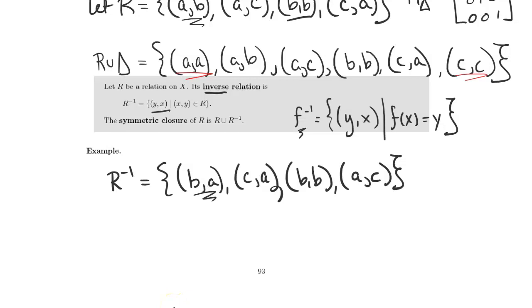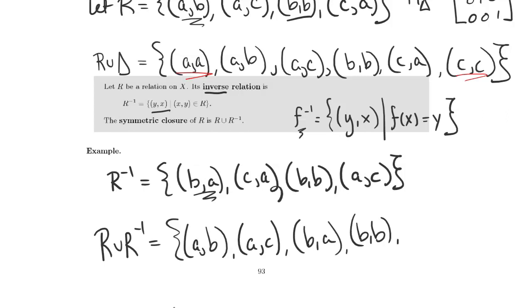Then the symmetric closure of R is the relation R union R inverse which is the set of pairs AB, AC, BA, BB, and CA.